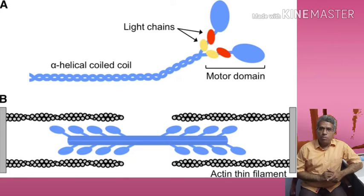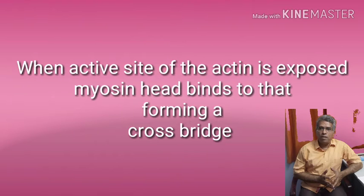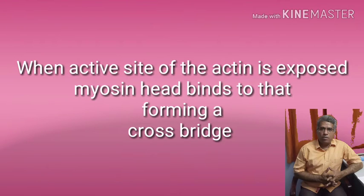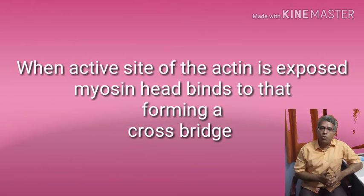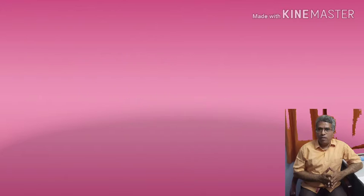This binding of the myosin head with the active sites of the actin forms a cross bridge. These cross bridges are formed and collapsed alternately. During contraction, certain physical changes occur in the sarcomere: the I band gets reduced in size whereas the A band remains as it is.